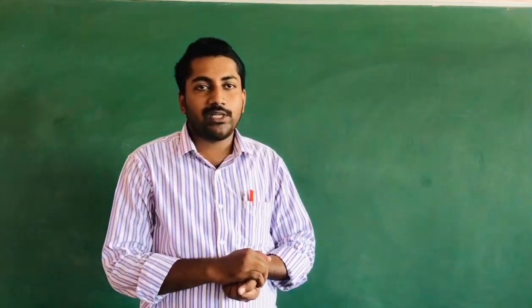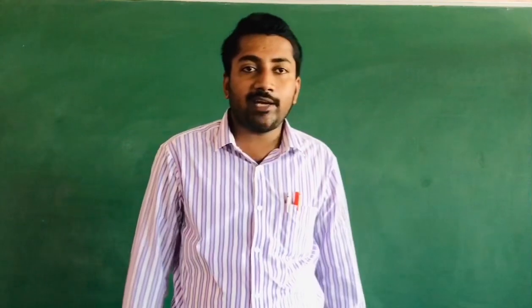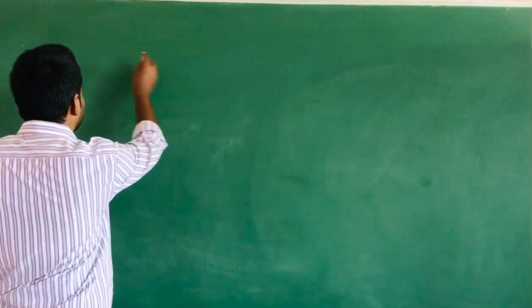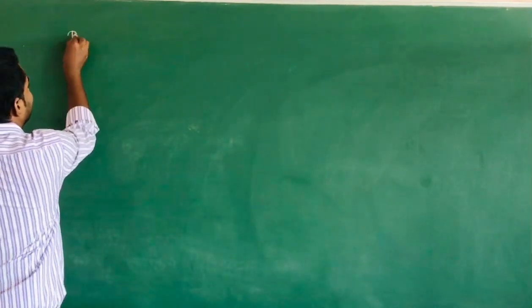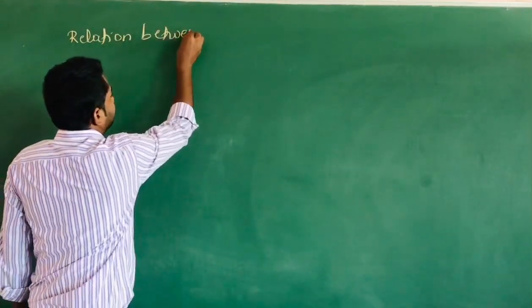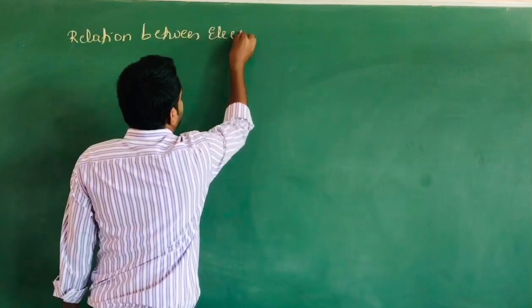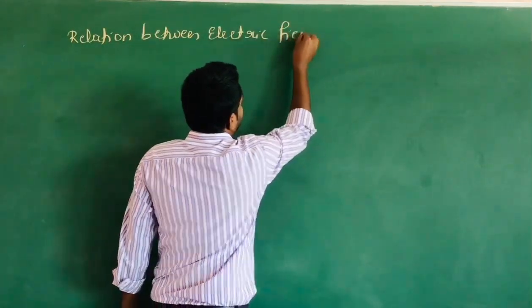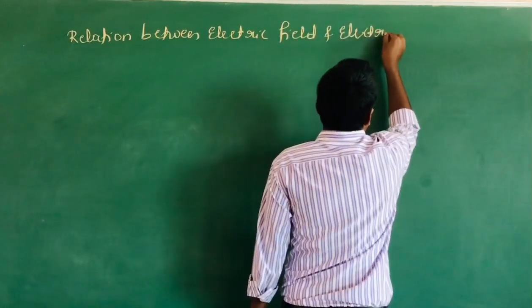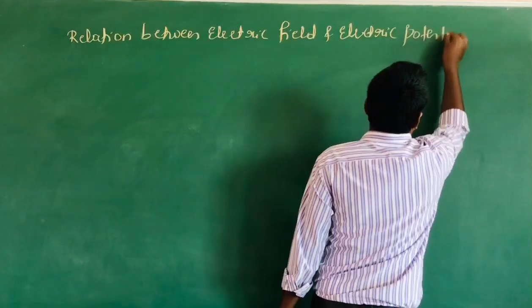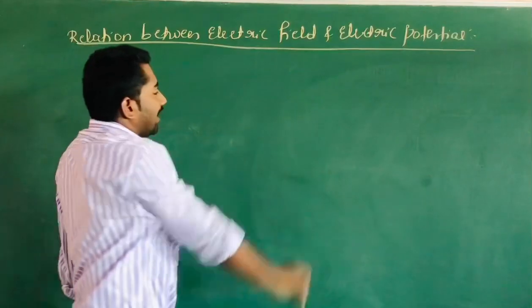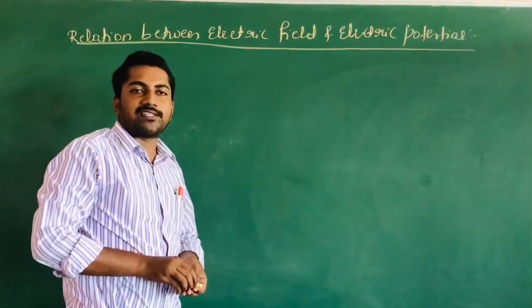I am going to discuss about the relation between electric potential and electric field. Electric field is mathematically denoted by the symbol E and electric potential is mathematically denoted by the symbol phi.